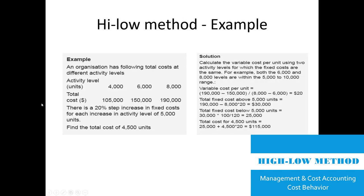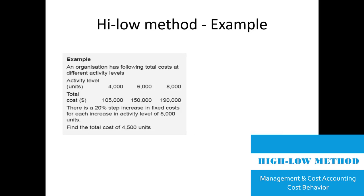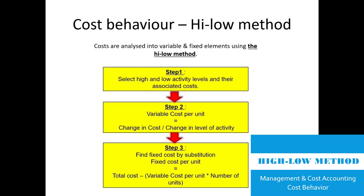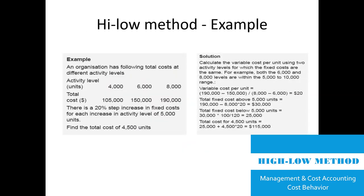Both six thousand and eight thousand unit levels are within the five thousand to ten thousand range, so they share the same fixed cost. Variable cost per unit is calculated as the difference in cost divided by the difference in activity: forty thousand divided by two thousand equals twenty dollars per unit. Total fixed cost above five thousand units can then be found by substitution, giving us thirty thousand.